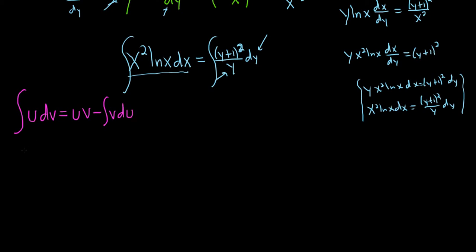So u has to be something that we can differentiate, and dv has to be something we can integrate. So that kind of forces us to let u be ln x. I don't really want to integrate the natural log of x. And then dv is what's left over, so dv would be x squared dx.